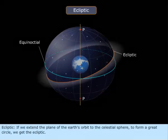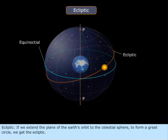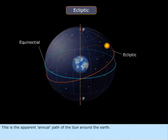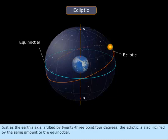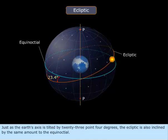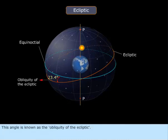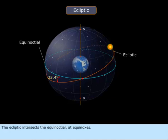Ecliptic. If we extend the plane of the Earth's orbit to the celestial sphere to form a great circle, we get the ecliptic. This is the apparent annual path of the Sun around the Earth. Just as the Earth's axis is tilted by 23.4 degrees, the ecliptic is also inclined by the same amount to the equinoctial. This angle is known as the obliquity of the ecliptic. The ecliptic intersects the equinoctial at equinoxes.